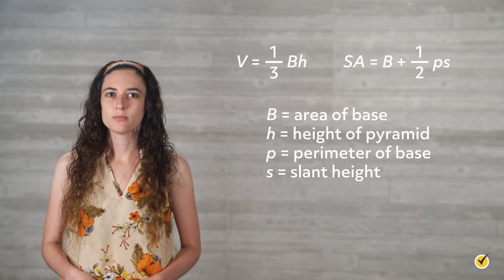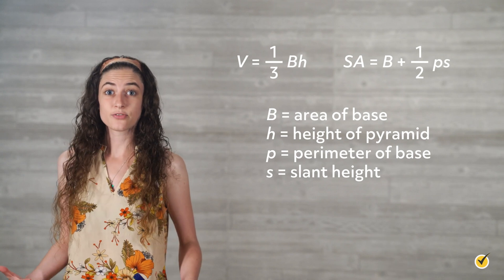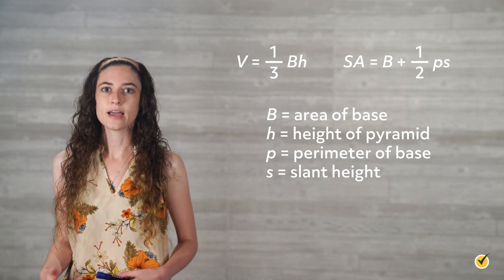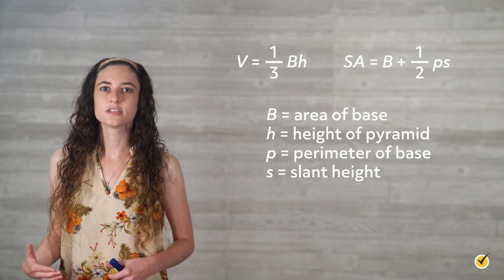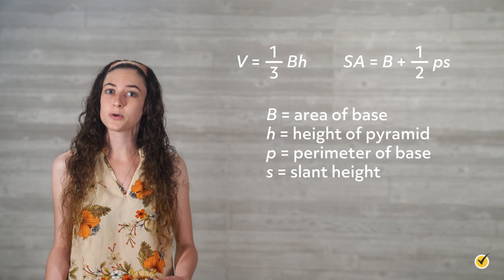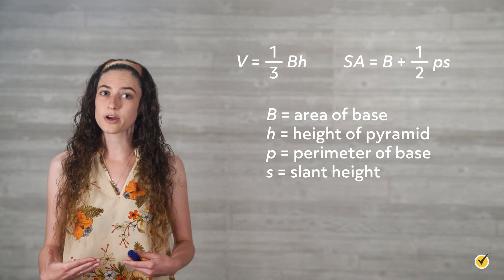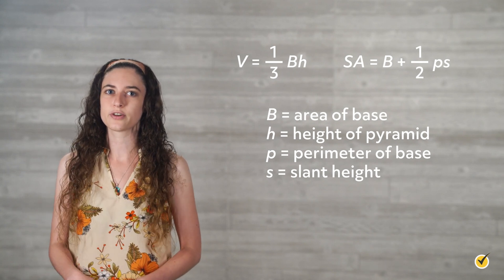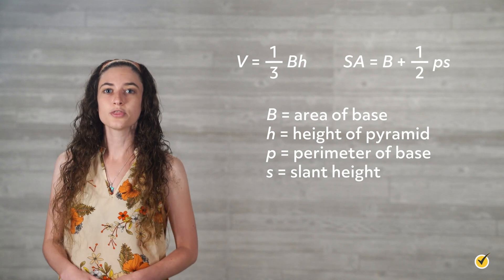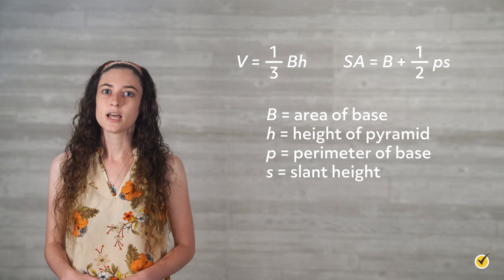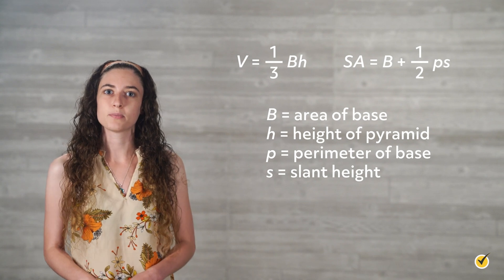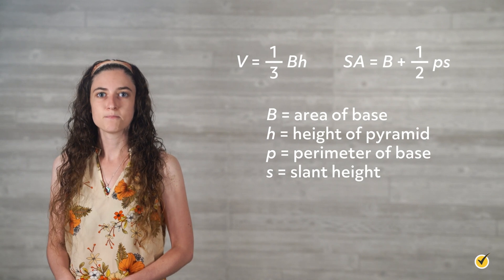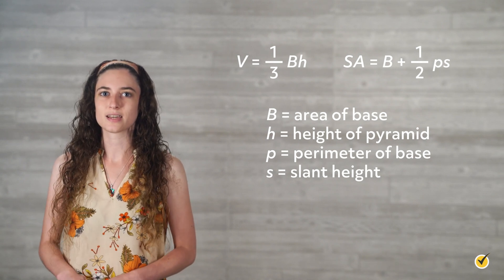Here are the formulas for the volume and surface area of any pyramid. We need big B, which represents the area of the base, and P, which represents the perimeter of the base. Since the base of a pyramid can be any polygon, we will use our prior knowledge of finding the area and perimeter of different polygons. Volume equals one-third big B times H, and surface area equals big B plus one-half PS, where big B is the area of the base, H is the height of the pyramid, P is the perimeter of the base, and S is the slant height.